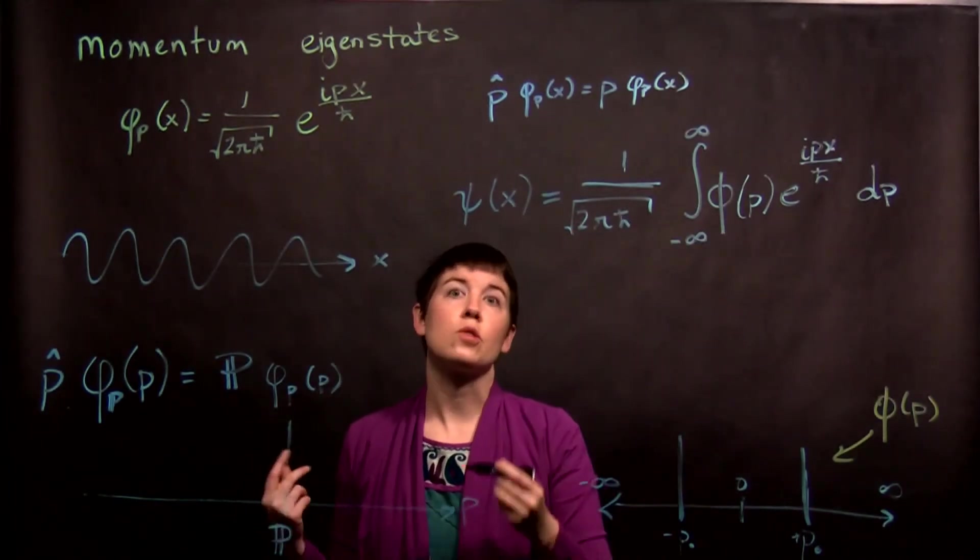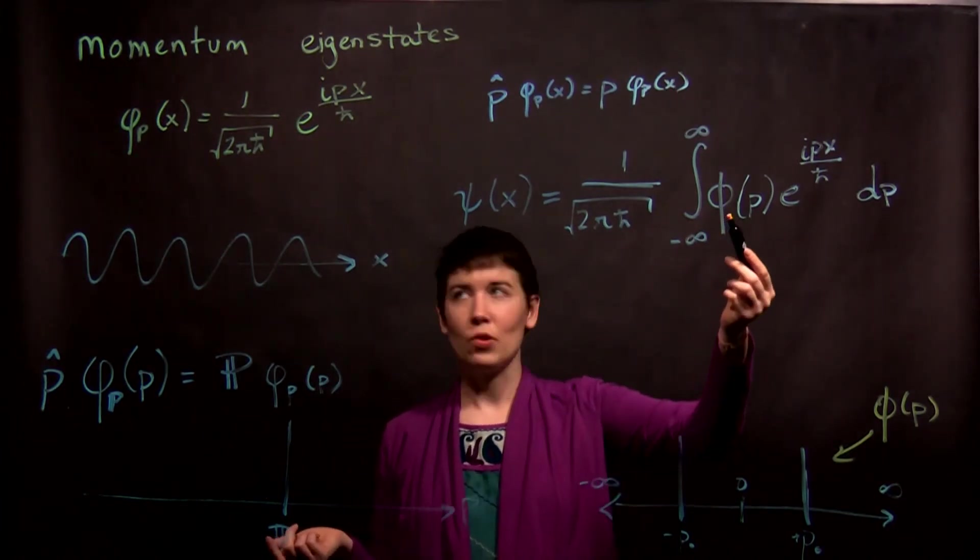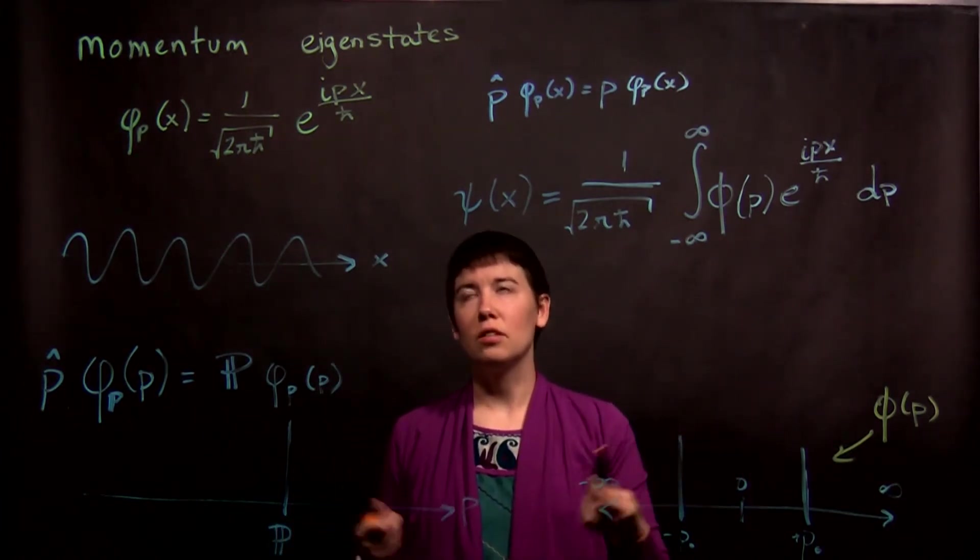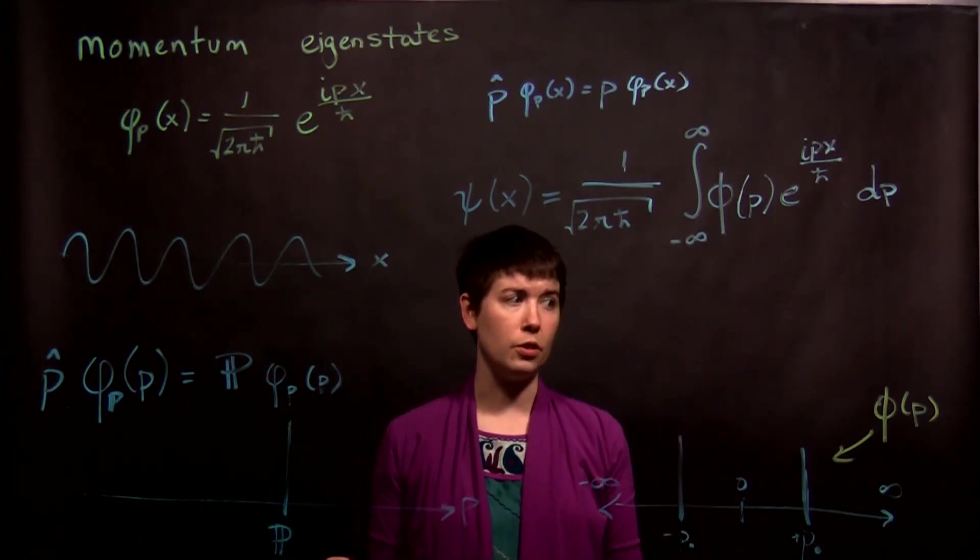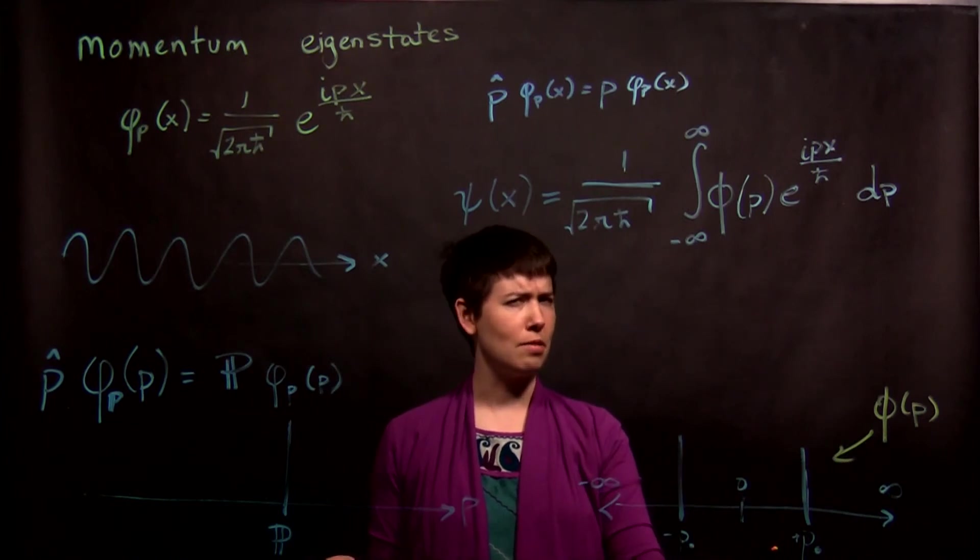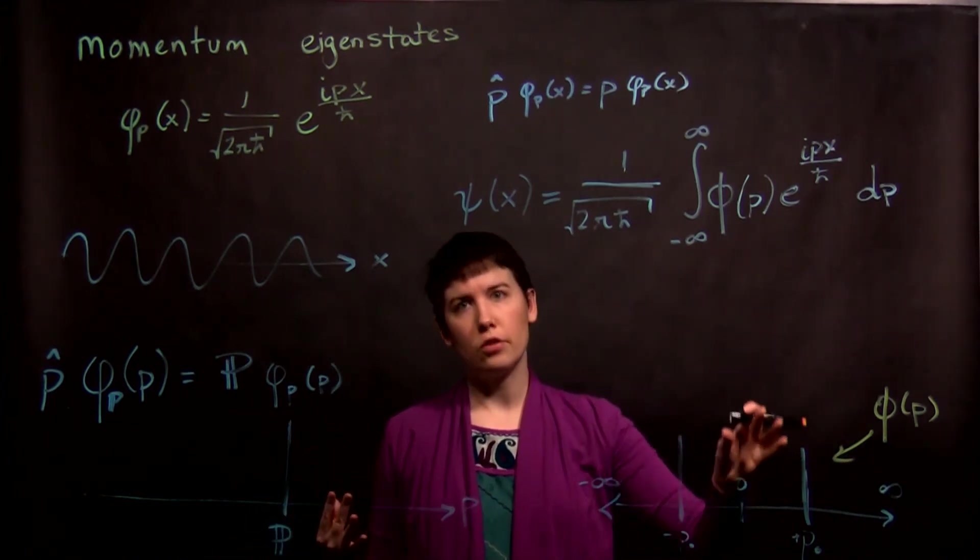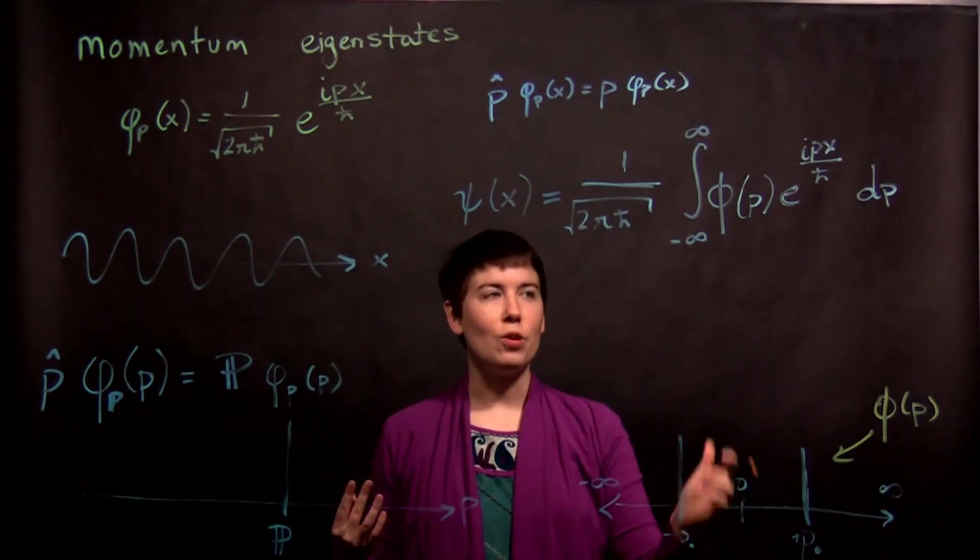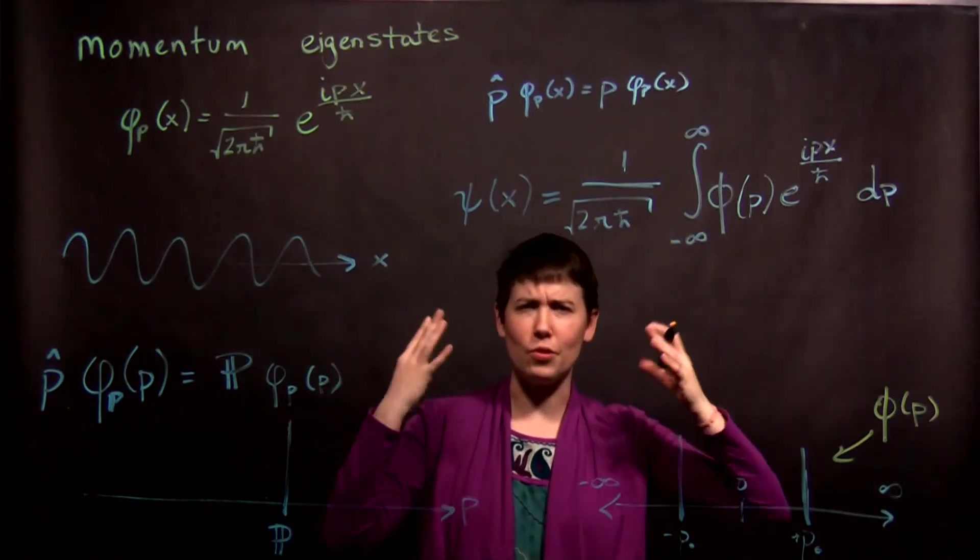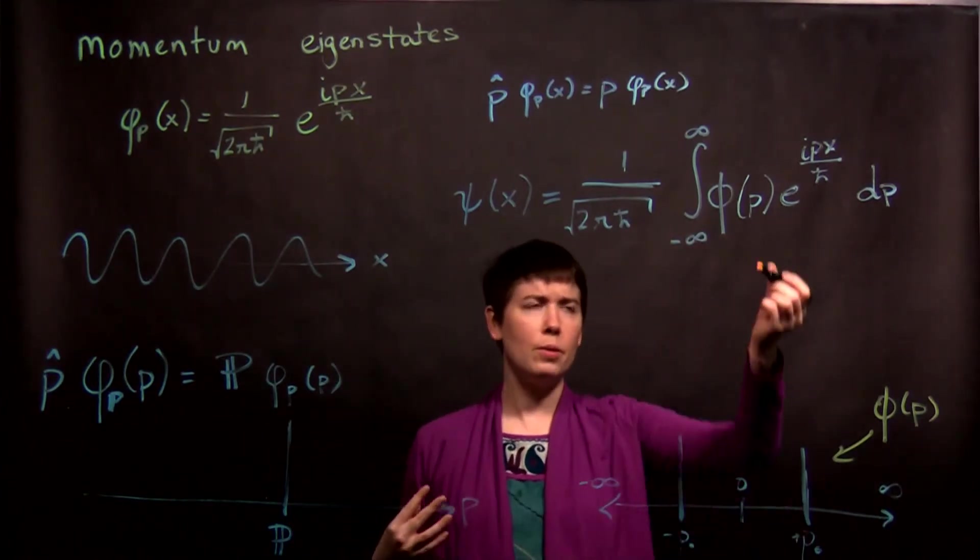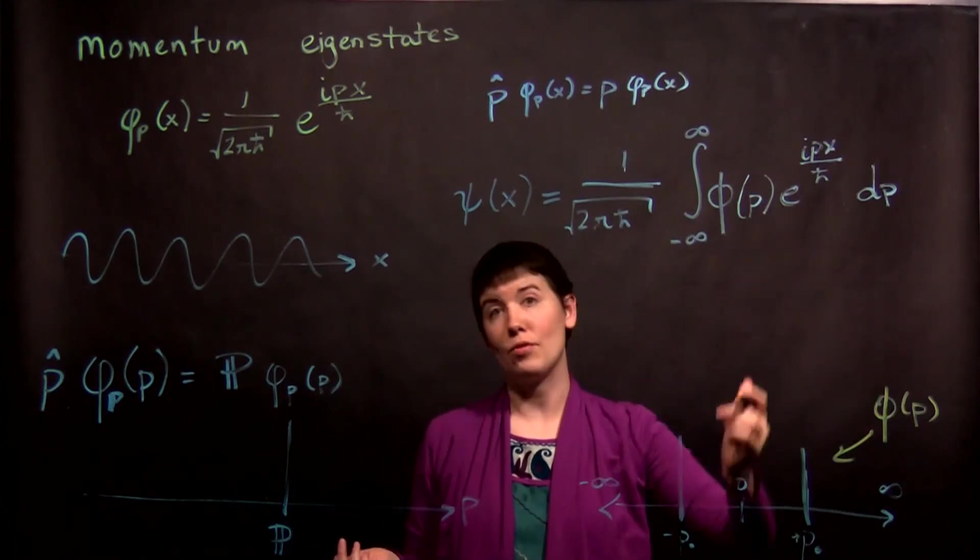If you kind of think about it, it's almost like these are your coefficients in the Fourier transform we've been doing. And based on how I drew this, that's exactly what it is. So this is basically your Fourier transform, but now the momentum representation is then taking the place of your coefficients.